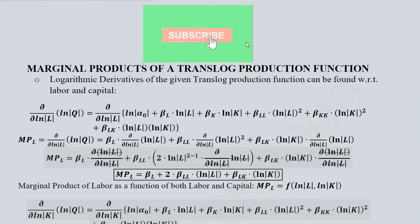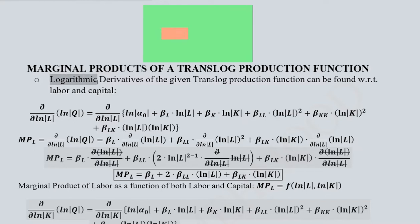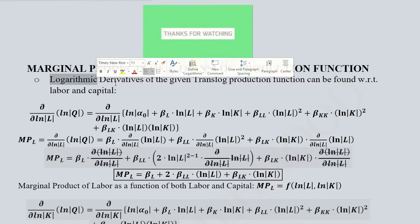In this video we will learn about the marginal products of the translog production function. We know that the marginal products are obtained by using the derivatives of the given production function. Here we have a translog production function, so we take its derivative — but it is not just an ordinary derivative, it is a logarithmic derivative.